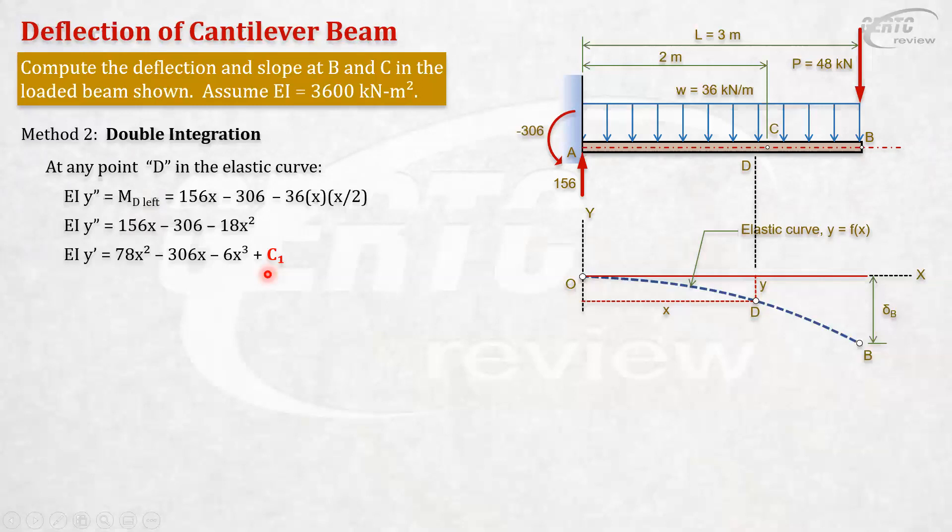All you need to know is to integrate this twice. First integration, EI will become y prime. The result here is slope. We will get the slope. Let's integrate it. This is x squared over 2, so 78. This is x cubed over 3. We will have a constant of integration. C1 equals zero.